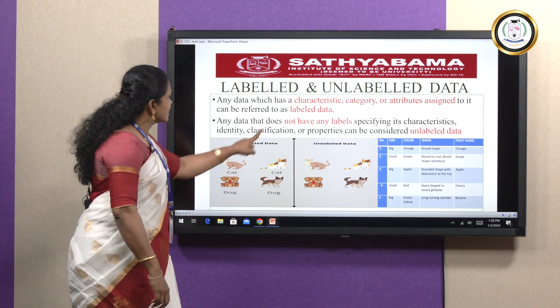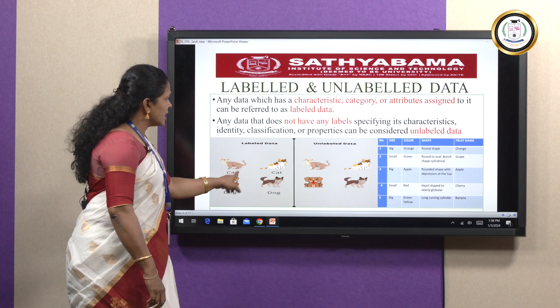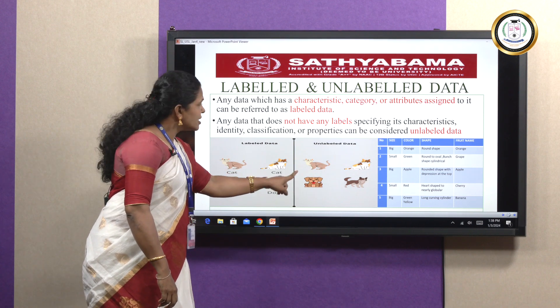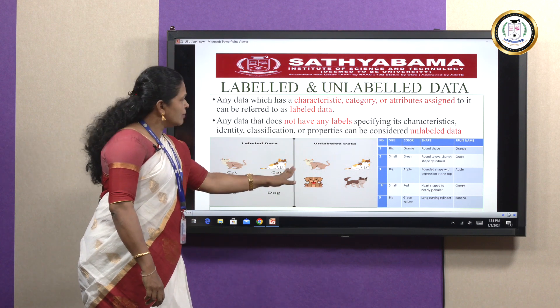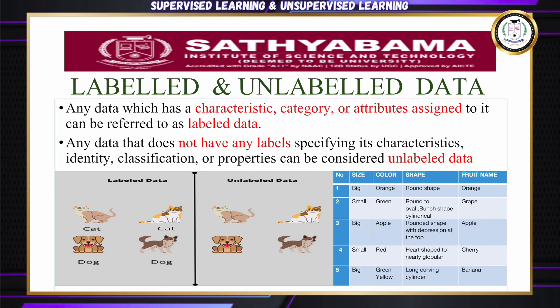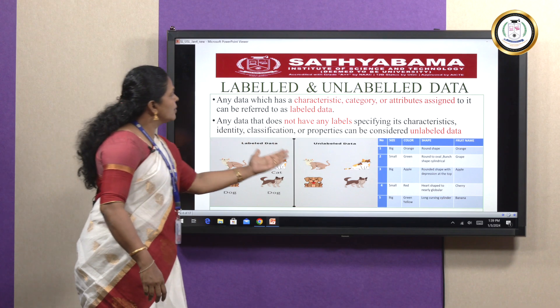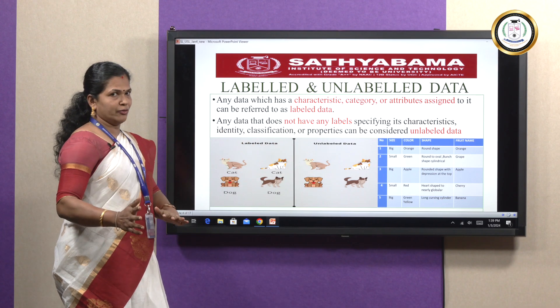In labeled data, we specify some attributes for these animals, providing additional information. In unlabeled data, we do not specify any names or attributes — no additional information is given.